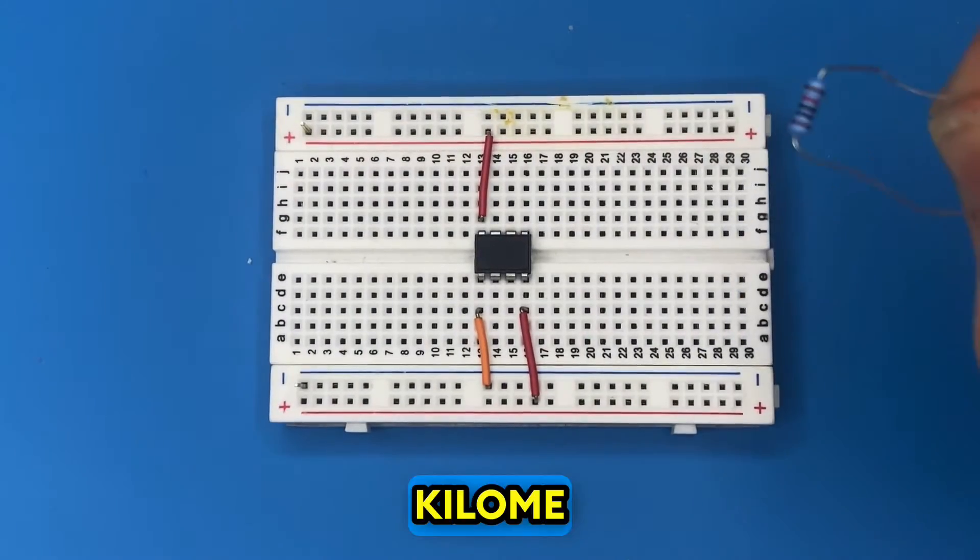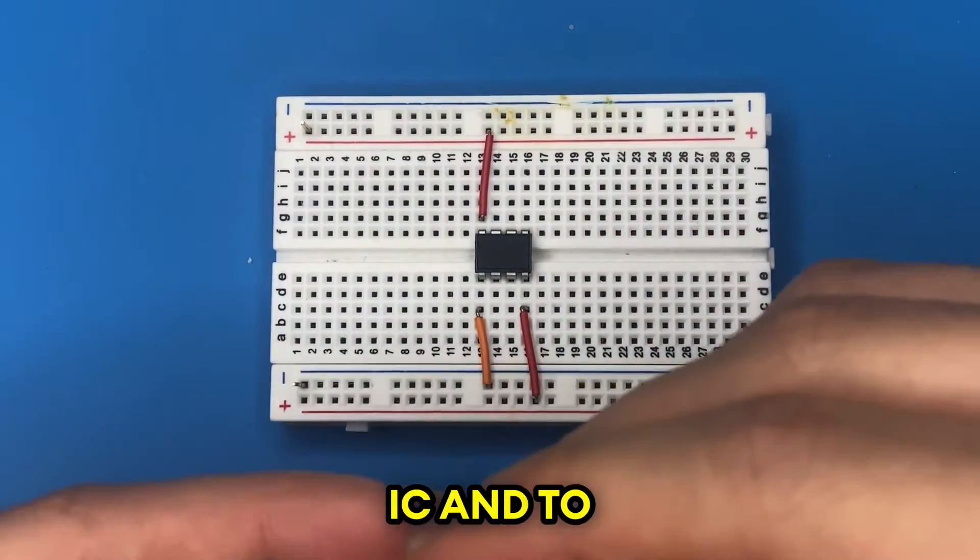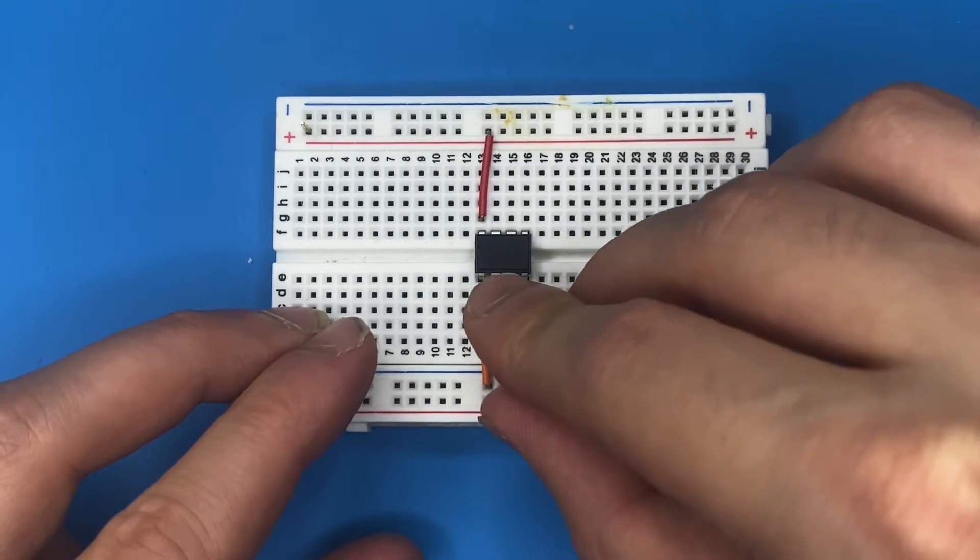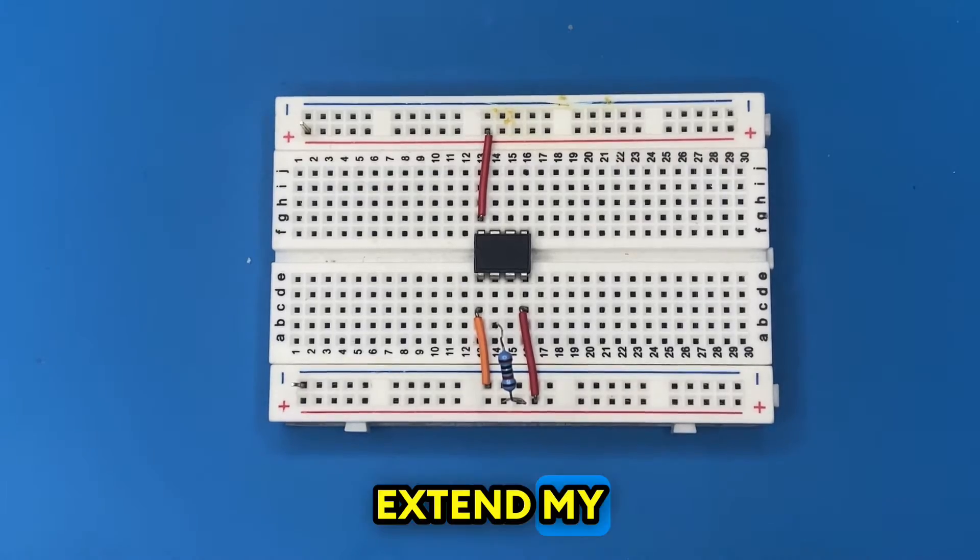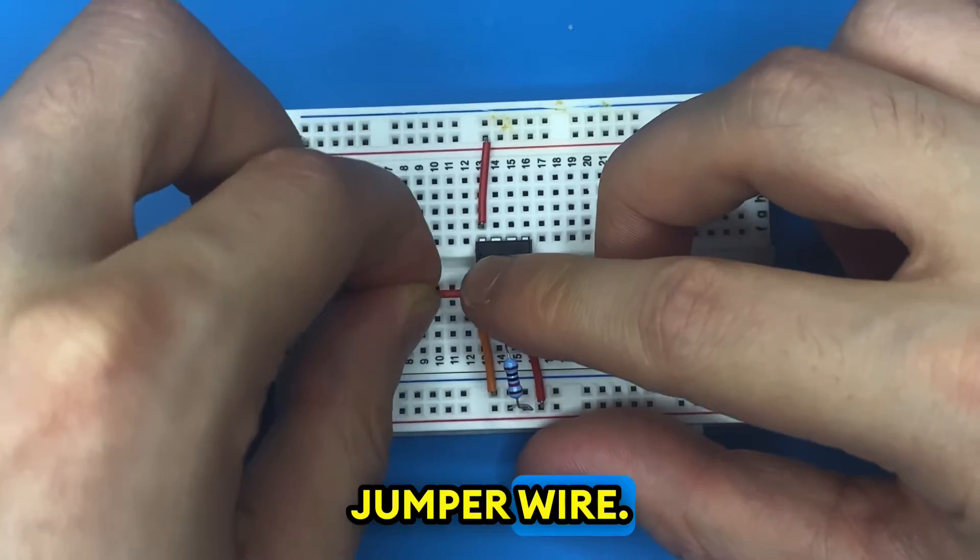Let's use our 10 kilo ohm resistor and connect it to pin two of the IC and to the positive rail of the breadboard. Now I'm going to extend my second pin of the IC using this jumper wire.